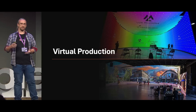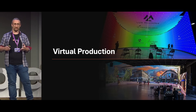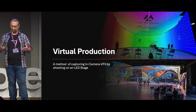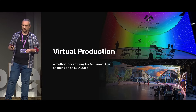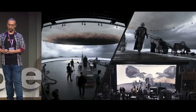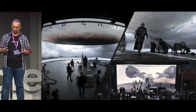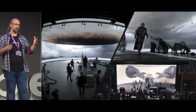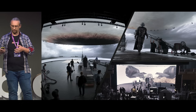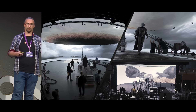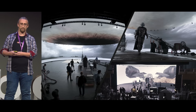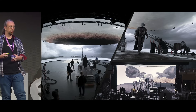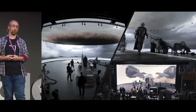Before I really dive into this, I firstly want to take a moment to explain what I mean by virtual production car process for those who may not be aware. Put simply, virtual production is a method of capturing in-camera VFX by shooting on an LED stage. The most well-known example of this is probably ILM's The Volume, on which The Mandalorian was shot. Basically, instead of shooting against a green screen and adding the VFX in post, virtual production allows you to capture the final product directly in-camera by streaming content onto an LED wall — either in real-time using something like Unreal Engine, or using pre-recorded content, which are known as plates.